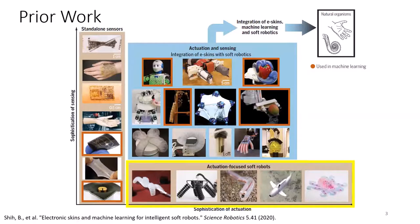Approaches to soft actuation are shown along the x-axis, which include pneumatic and chemical actuation. These actuation methods have been successfully applied to a variety of soft systems, including bioinspired and locomotion robots.